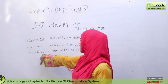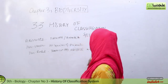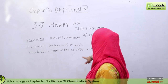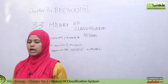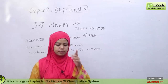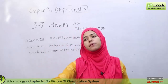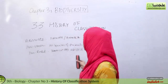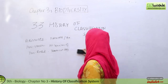Ibn Rushd translated the book that Aristotle wrote into Arabic. You can say there are 3 followers, 3 biologists, and 3 who have been involved in classification.